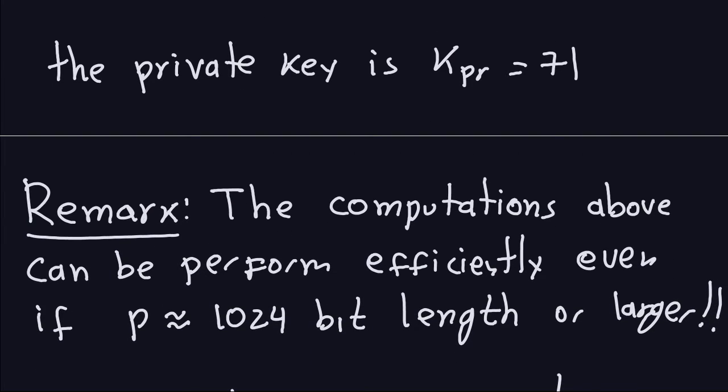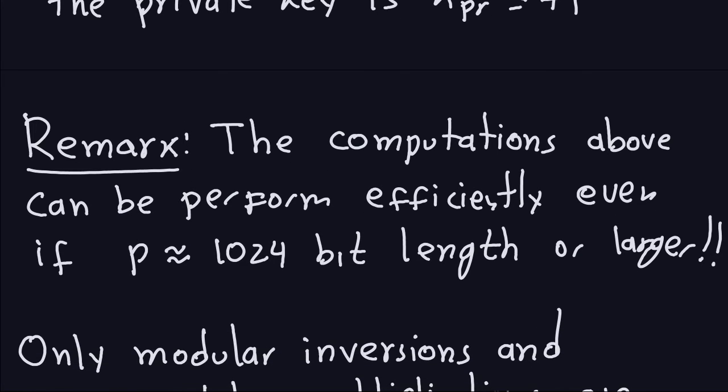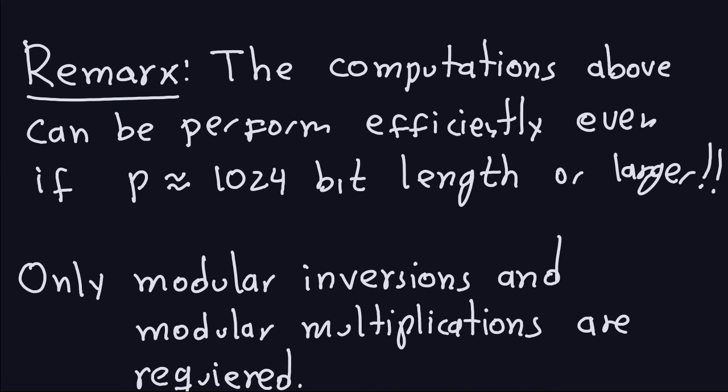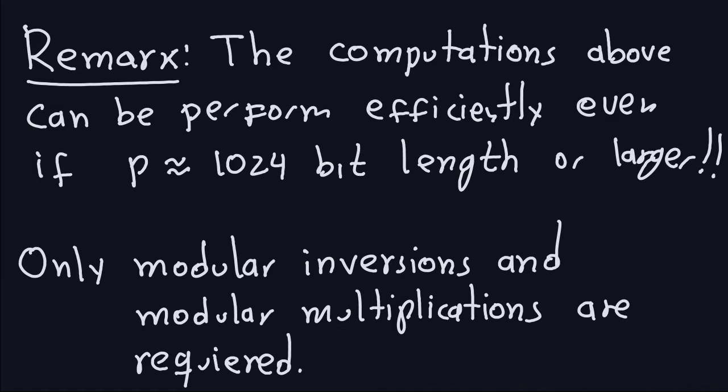I'm going to do this remark again because I think this is very important, that the computation above can be performed efficiently, even if the prime that we are using is 1024-bit. And even if we choose the divisors of P-1 to be large, that doesn't matter. The only thing that we are doing is only modulo inversions and modulo multiplications are required. Nothing else. And modulo inversions and modulo multiplications are fast, even though you use these big numbers. The whole point that I wanted you to take out of this example is that you don't need discrete logs to compute the private key if the sender is using the ephemeral key twice. Bad idea. Really, really bad idea. You don't need discrete logs.